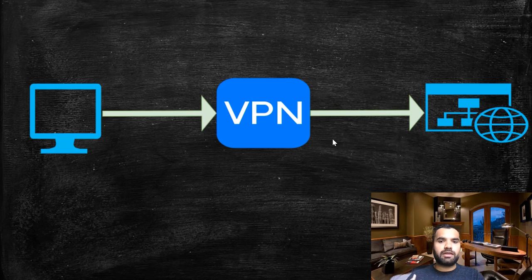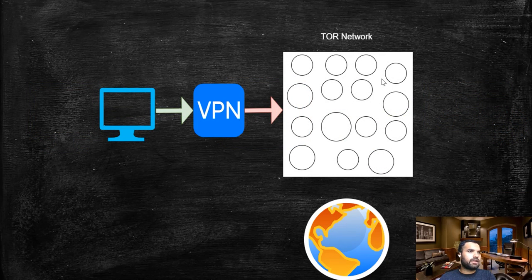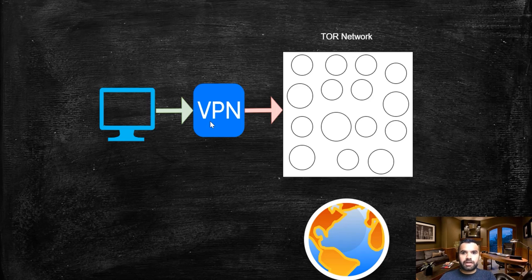Now let's talk about how VPN is used with the Tor network. The flow is: user → VPN → Tor network → internet. This provides three extra benefits. The first is an extra layer of encryption. VPN provides encryption that isn't present when connecting directly to Tor, since your sysadmin, ISP, or even someone at a café can intercept unencrypted traffic.